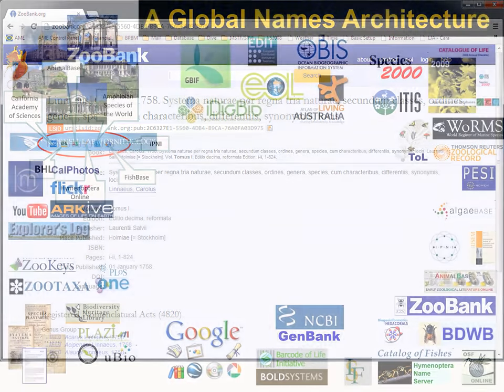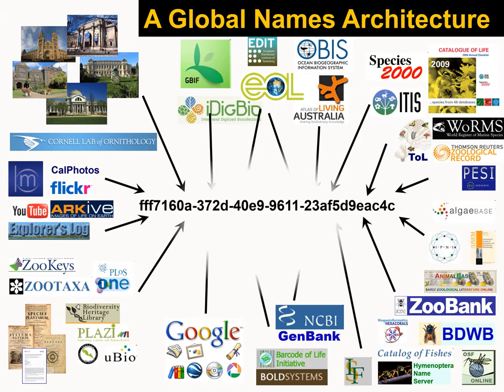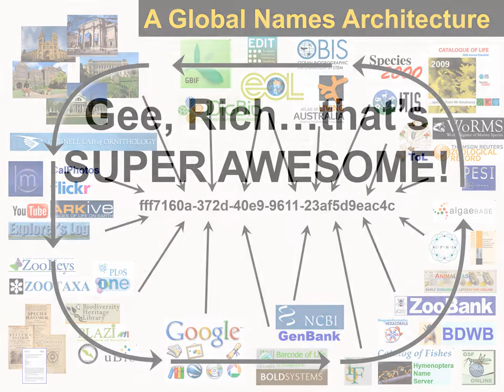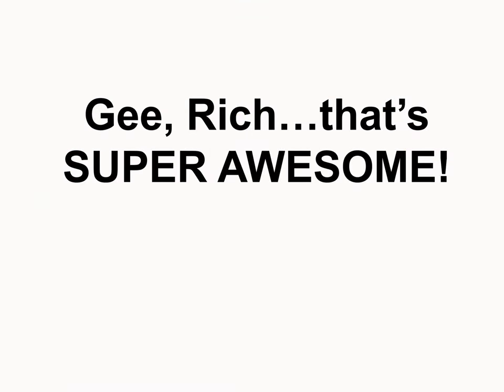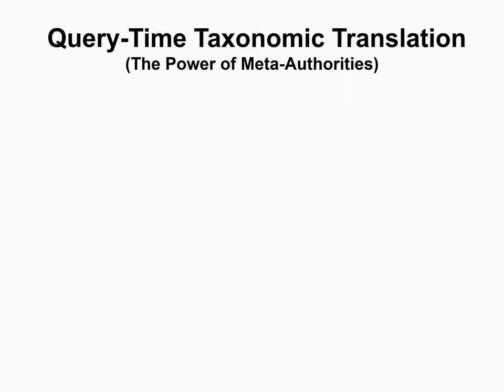So to wrap up: instead of using a text string in the middle to tie all this data together, we can use UUIDs. We can bridge the gap between text strings and UUIDs. Now, you might still be thinking, that sounds kind of cool but I don't understand how I can use it. So I'm going to finish with what I think is the holy grail of what we've been after: query-time taxonomic translation — also known as the power of meta-authorities.